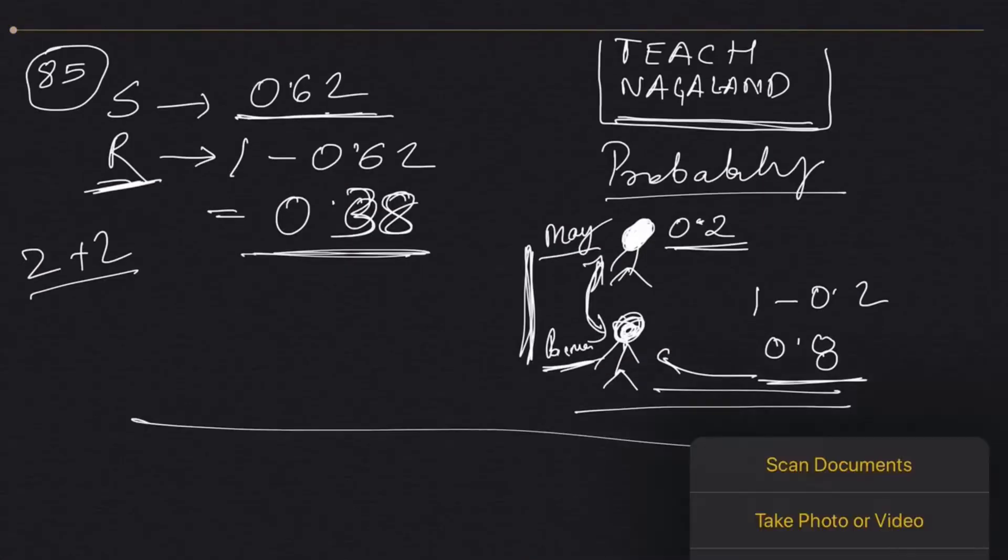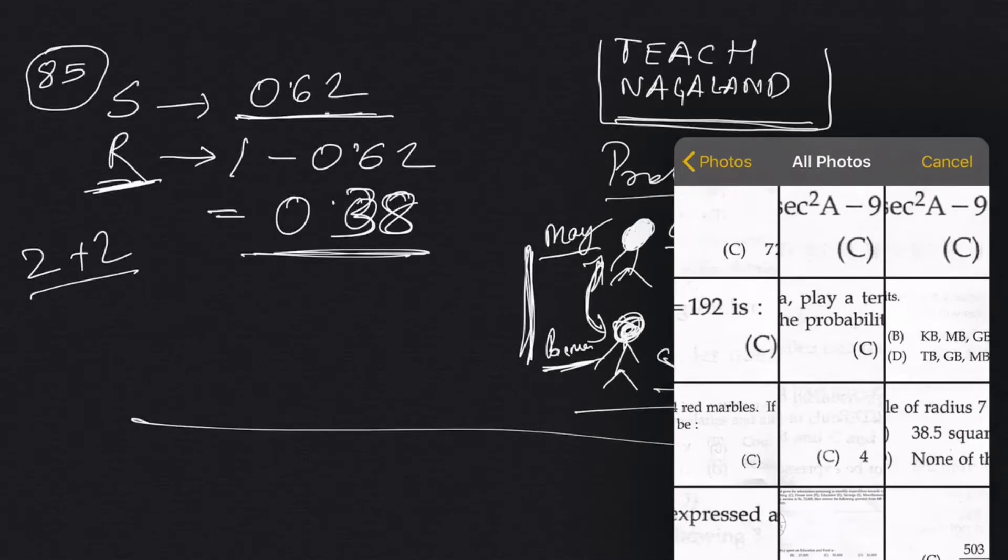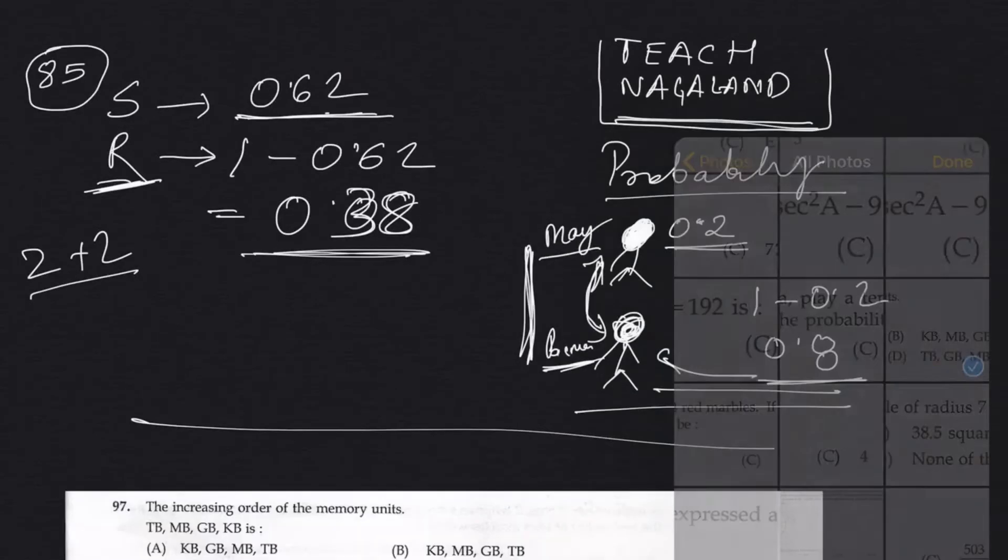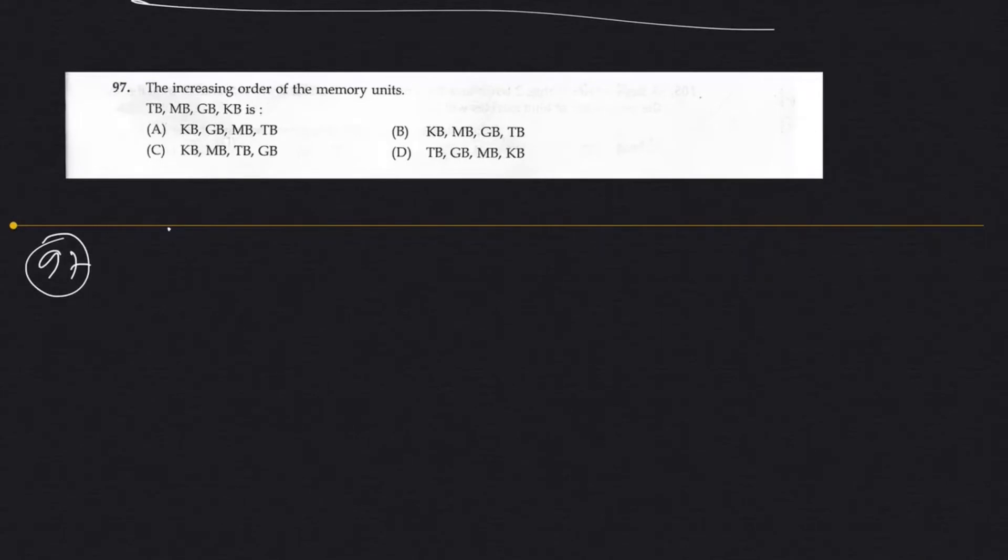Actually this is not a math question, it is quantitative ability question, this is general knowledge like question. But let's solve it since I've already loaded the question. The increasing order of the memory units KB, MB, GB, TB. This is very easy for people who have no idea what this question is all about. Let me explain so that in future if you get similar kind of questions in exams you should be able to solve them confidently.